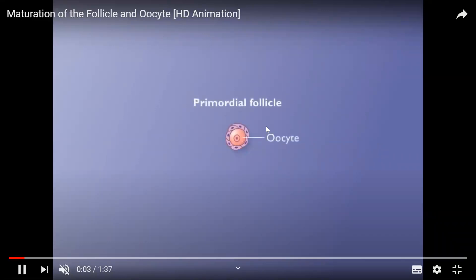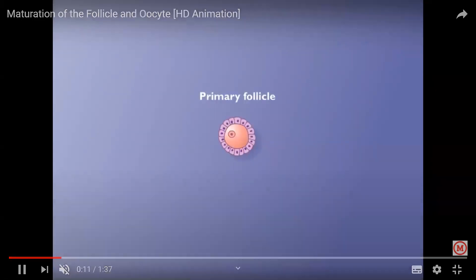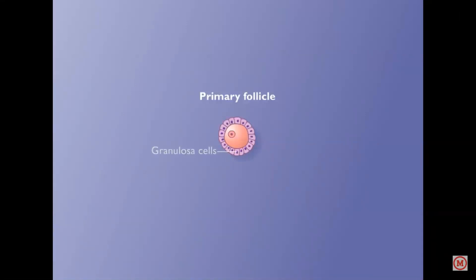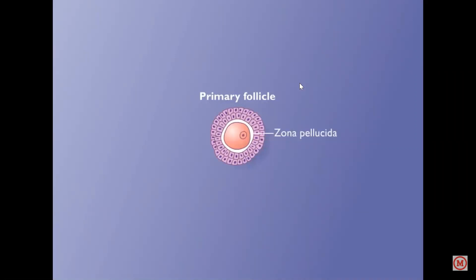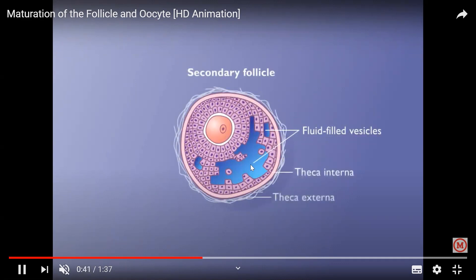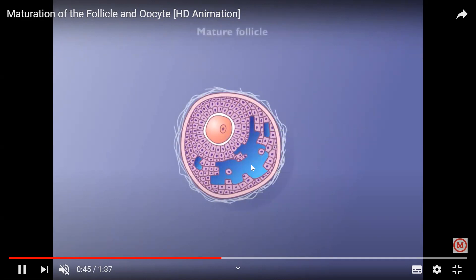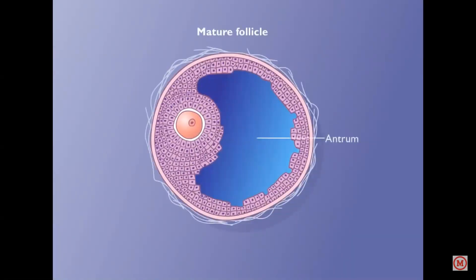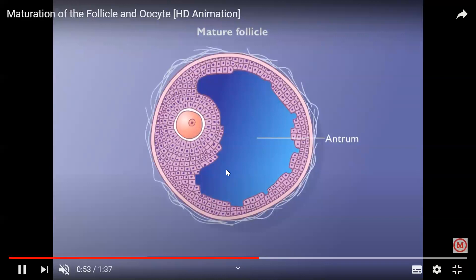Looking at this structure, the primary oocyte is surrounded by just a single layer of follicular cells called granulosa cells. More and more cells are added, and the primary follicle changes into a secondary follicle and then into a tertiary follicle. A white layer around the ovum is visible — that is called zona pellucida. A cavity then starts appearing, and inside this cavity is the follicular fluid called liquor folliculi.